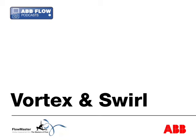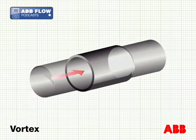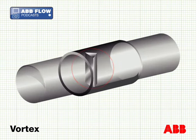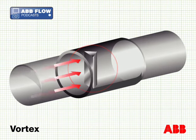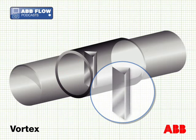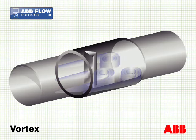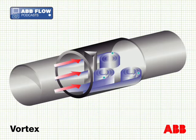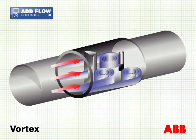The ABB vortex flow meter is based on the pressure variations which occur when a flow is interrupted by an obstruction. Here the flow passes a wedge-shaped obstruction called a bluff body, inducing eddies or vortices in the flow. These vortices occur at a rate proportional to the velocity at which the fluid is moving. A sensor detects the pressure variations caused by the vortex stream and transmits the signal to the electronic signal conditioner.